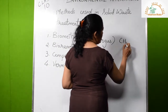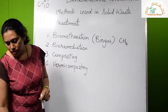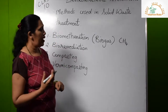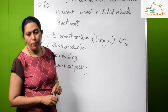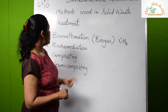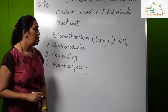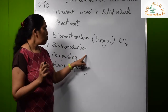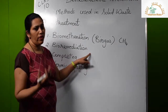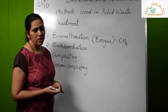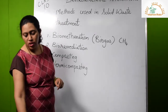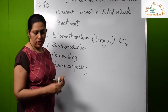This biogas is not just methane — it is about 65% methane along with other gases like hydrogen, hydrogen sulfide which gives a bad smell, water vapor, carbon dioxide, etc. Now the next method is bioremediation. Bioremediation is a process of using microbes or bacteria to repair the damage created to the environment. For example, in case of oil spills, oil-degrading bacteria or microorganisms are used.